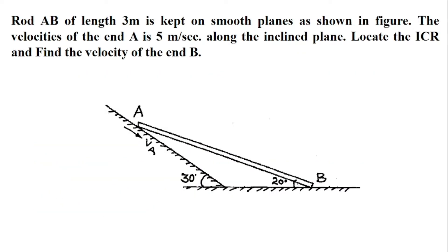Now let's look at the type of question asked in the final exam — this is a single link question. Rod AB of length 3 meters is kept on a smooth plane as shown in the figure. The velocity of end A is 5 meters per second along the inclined plane. Locate the ICR and find the velocity of point B. The inclined plane angle is 30 degrees and the angle between the horizontal and AB is 20 degrees.